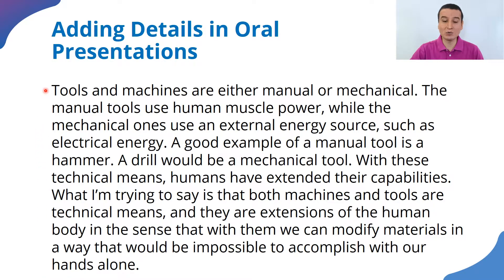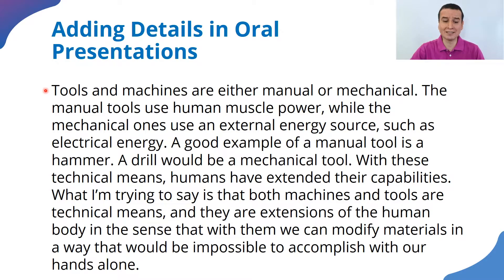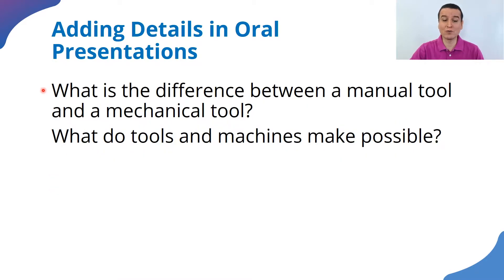That is a good description of manual and mechanical tools. Let's make sure that we understand this. What is the difference between a manual tool and a mechanical tool? The difference is the type of energy — whether it's electrical energy or manual energy, meaning muscle power from humans.